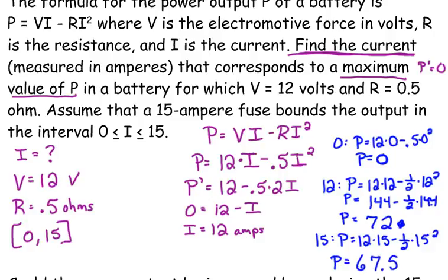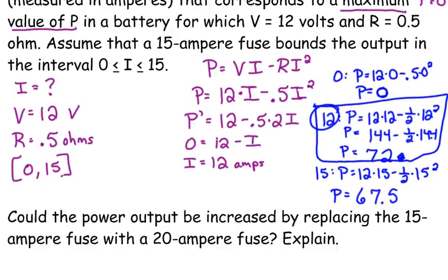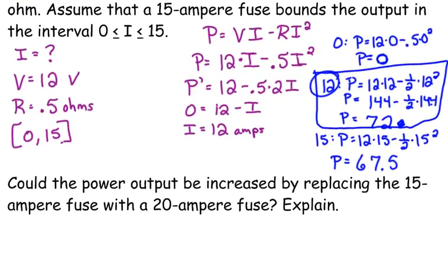So, the 12 does give us the maximum power output. So, that's the question. 12 amps gives us the maximum power in this circuit or battery fuel.